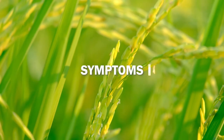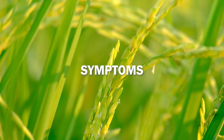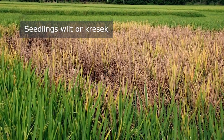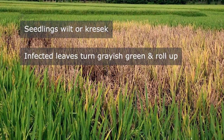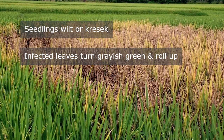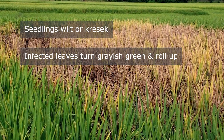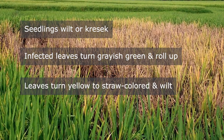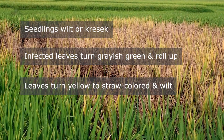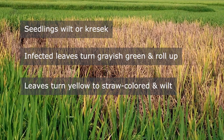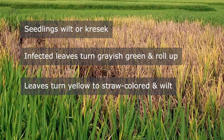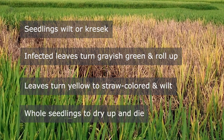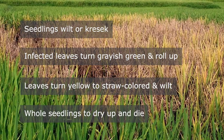Symptoms: Seedlings wilt or collapse. Infected leaves turn grayish green and roll up. As the disease progresses, the leaves turn yellow to straw-colored and wilt, leading whole seedlings to dry up and die.